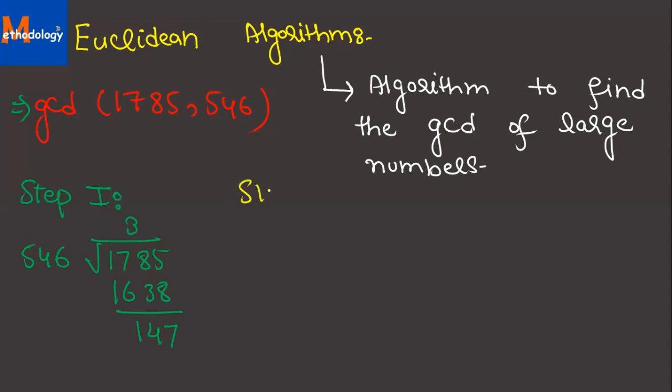Now step number 2 - what will happen? The divisor of step 1 becomes the dividend in step 2. The remainder of step 1 becomes the divisor. So the divisor 546 from step 1 is now divided by remainder 147.